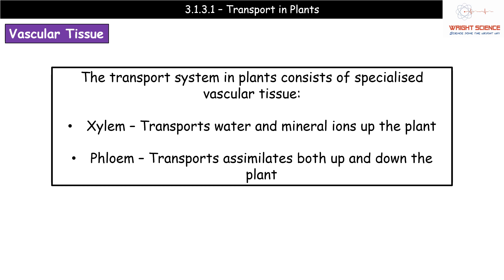Moving on to what the transport system actually is, plants have specialised vascular tissue made up of two key types: xylem, which transports water and mineral ions up the plant, and phloem, which transports assimilates both up and down the plant. A helpful memory tip: W for water comes before X for xylem in the alphabet. Remember what each transports and the direction — water only moves up in the xylem, whereas phloem transports assimilates up and down depending on need.